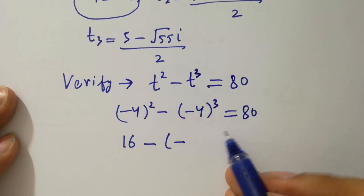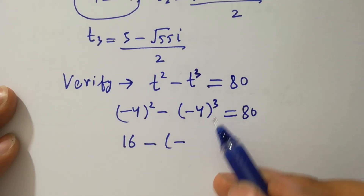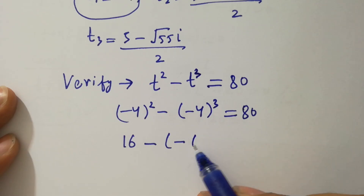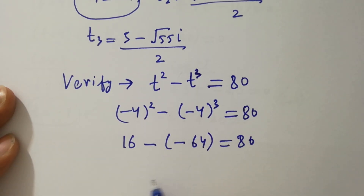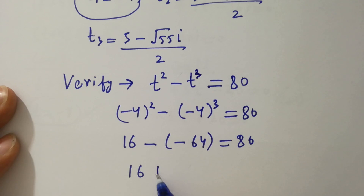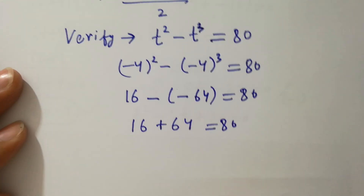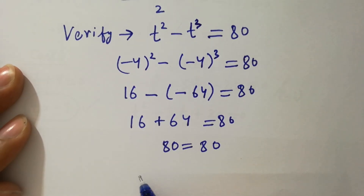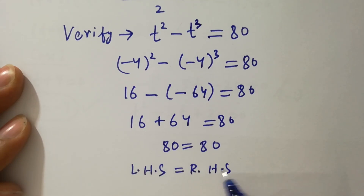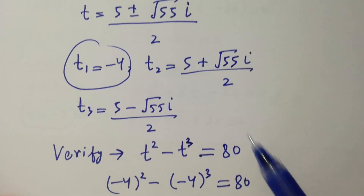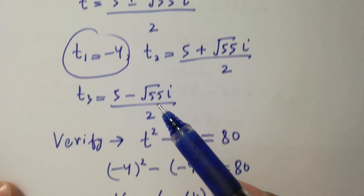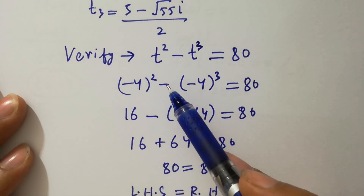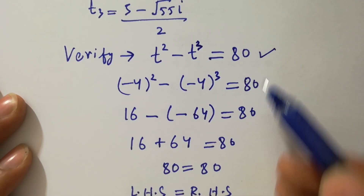Minus minus gives plus: 4 times 4 is 16. Since the exponent 3 is odd, minus 4 cubed is minus 64. So we have 16 minus minus 64 equal to 80, which gives 16 plus 64 equal to 80, and 80 equals 80. Left hand side equals right hand side, which shows that the value of t satisfies the equation t squared minus t cubed equal to 80.